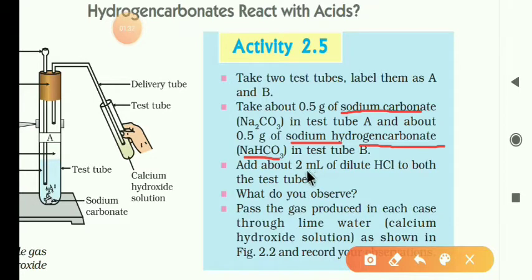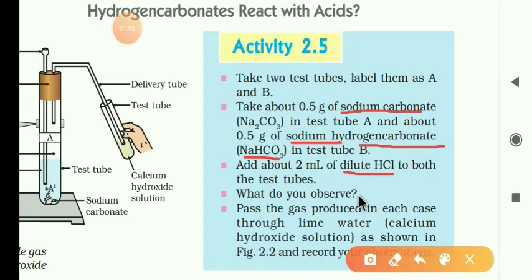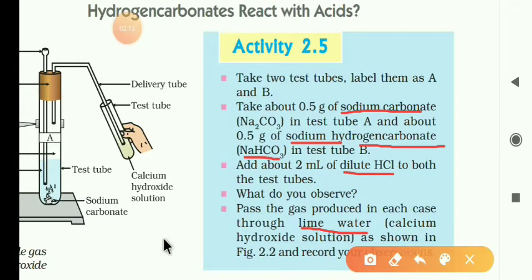Now add 2 mL of dilute HCl — dilute hydrochloric acid — to both the test tubes. What do you observe? The observation is evolution of gas. Pass the gas produced in each case through lime water, also called calcium hydroxide, as shown in the figure.